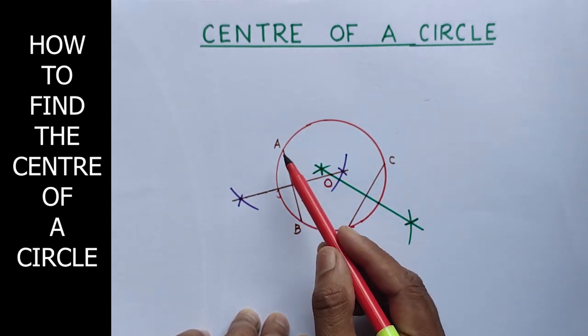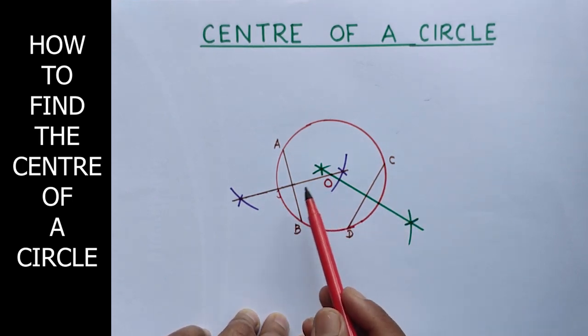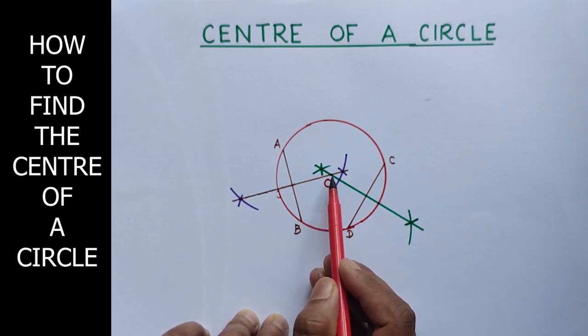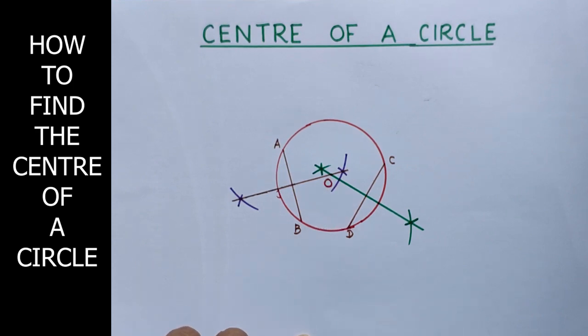See, first chord is AB. Second chord is CD. We have to draw the perpendicular bisectors of both the chords. And these perpendicular bisectors meet at O. That O is the center of the circle. Hope you understand the concept. Thank you.